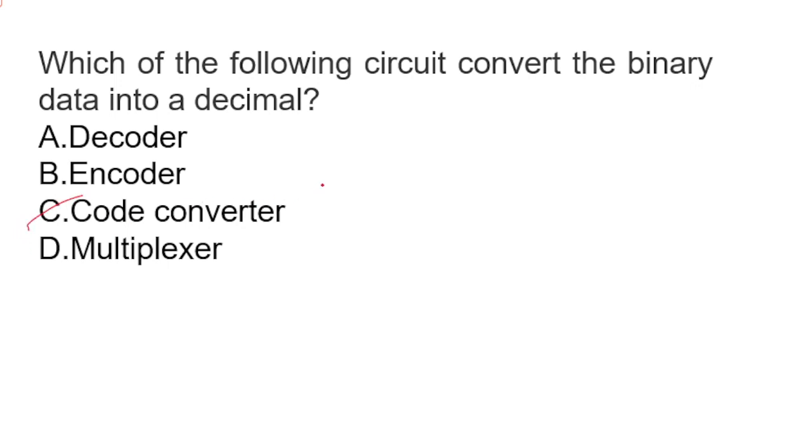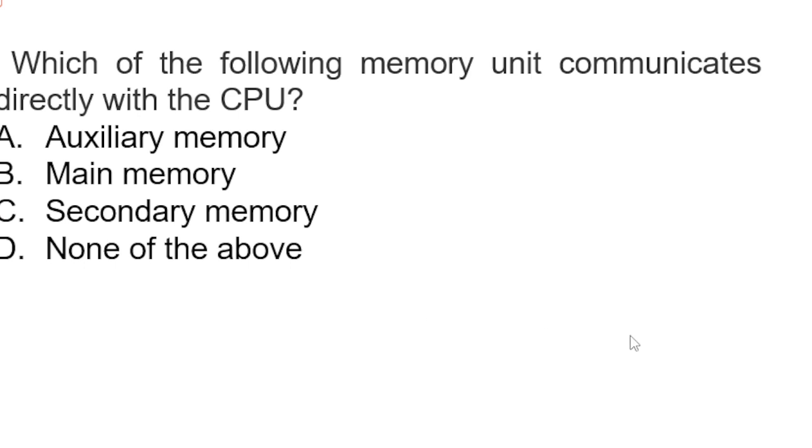Next question: which of the following memory unit communicates directly with CPU? Auxiliary memory, main memory, secondary memory, none of the above. It is communicating directly with CPU, so B is correct. The main memory acts as a central storage unit in a computer system. Main memory is the memory unit that directly communicates with the CPU. It is relatively large and fast memory that is used to store program and data during the run time operation.